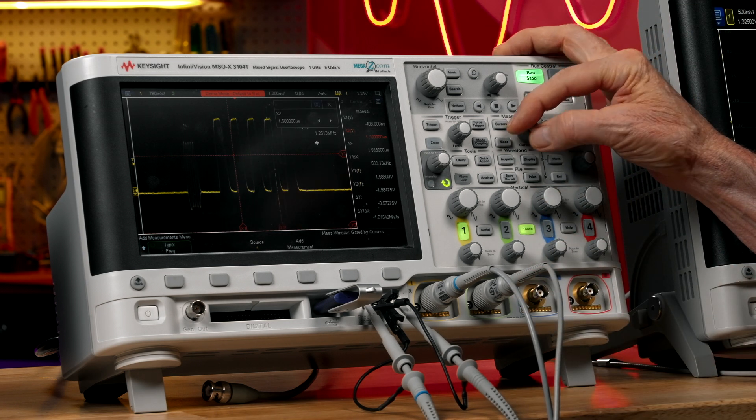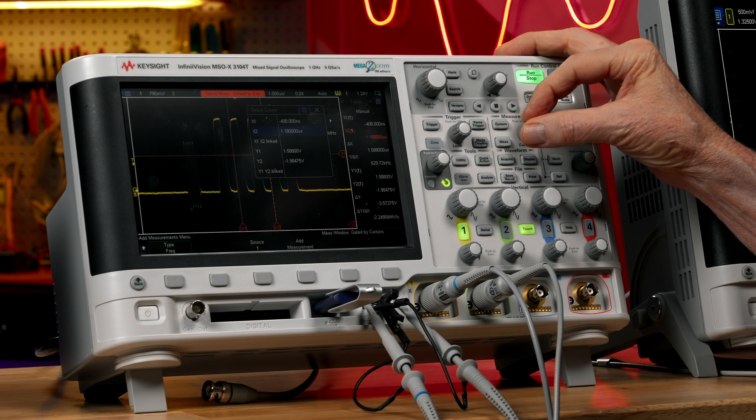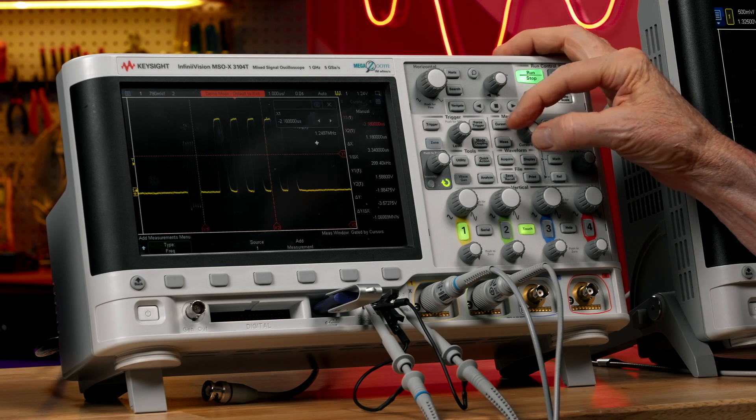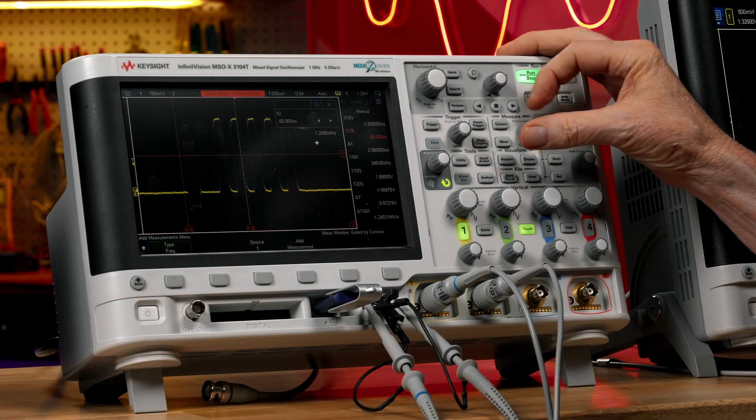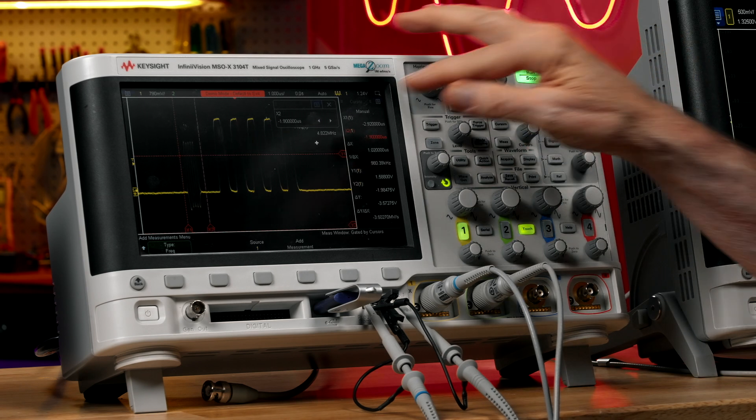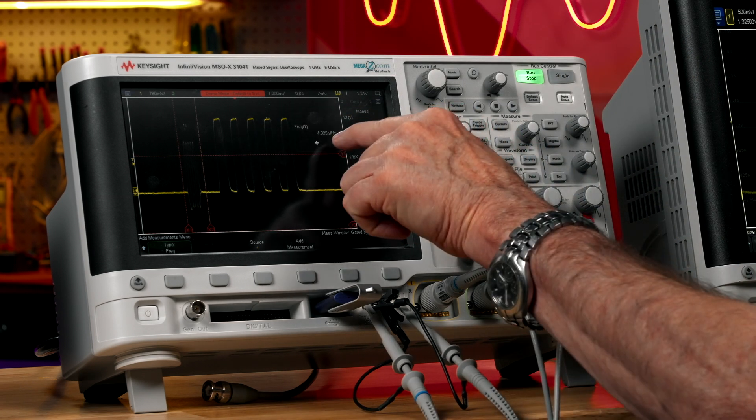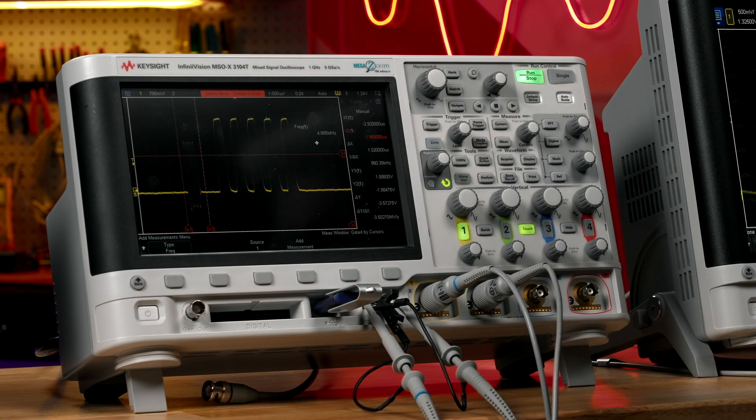Now let's measure the analog burst over there on the front porch. And we see that it measures about five megahertz.